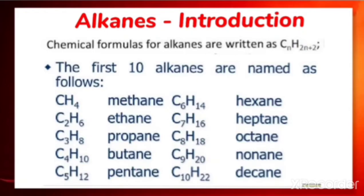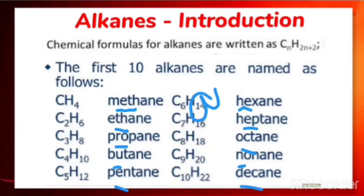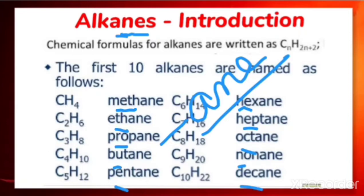Let us make the homologous series — the first 10 alkanes are named as follows. We have to remember the word roots: for 1 carbon 'meth', 2 carbon 'eth', then prop, but, pent, hex, hept, oct, non and dec. For alkanes, because all carbon-carbon bonds are single, we use the suffix '-ane'.